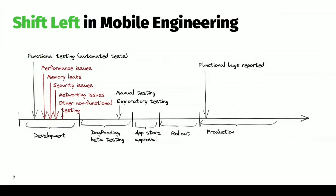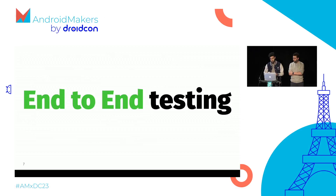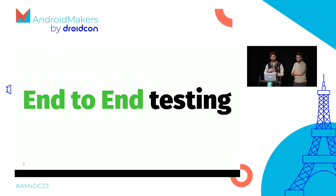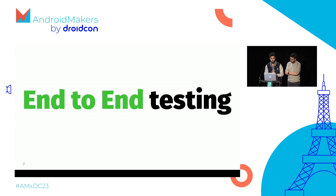One way to implement shift left is by using end-to-end testing. You may also know it as UI testing. For those who attended Xavier's talk this morning, it sits at the top of the test pyramid. Basically, it's testing your application by reproducing user behavior automatically on some devices or emulators. And that's what we did at JobTeaser in order to improve the shift left concept during our development phases.